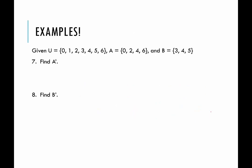Just to review: if the universe is 0, 1, 2, 3, 4, 5, 6, what is A complement? Looking at what's in A: 0 is in A, 2 is in A, 4 is in A, 6 is in A. So A complement would be 1, 3, and 5. B complement would be everything in the universe that's not in set B: 0, 1, 2, and 6.